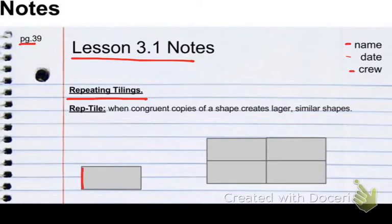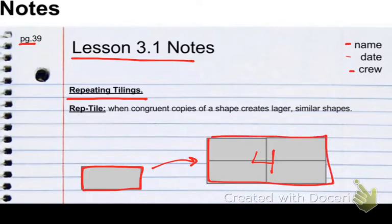For instance, when we have this rectangle right here, when we tile it and make four copies of it, we create a much larger version of it that is twice as tall and twice as wide.